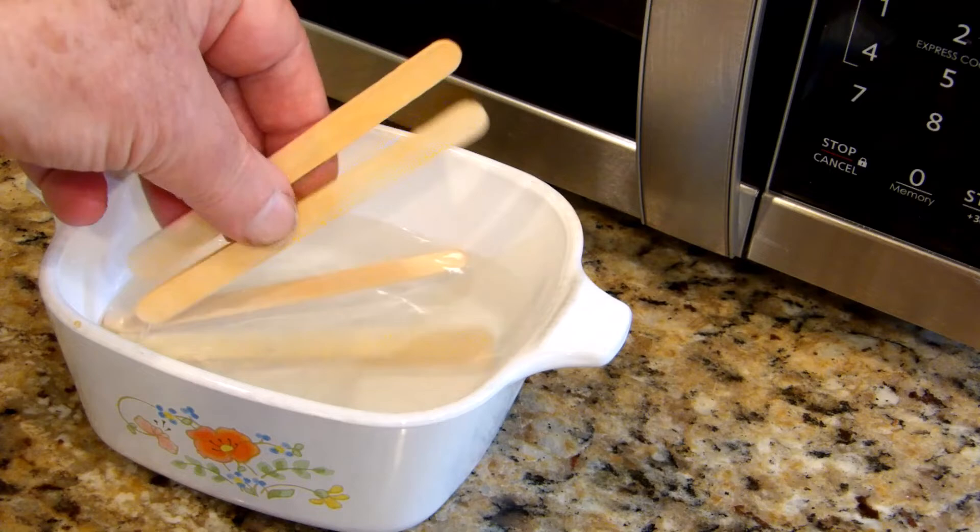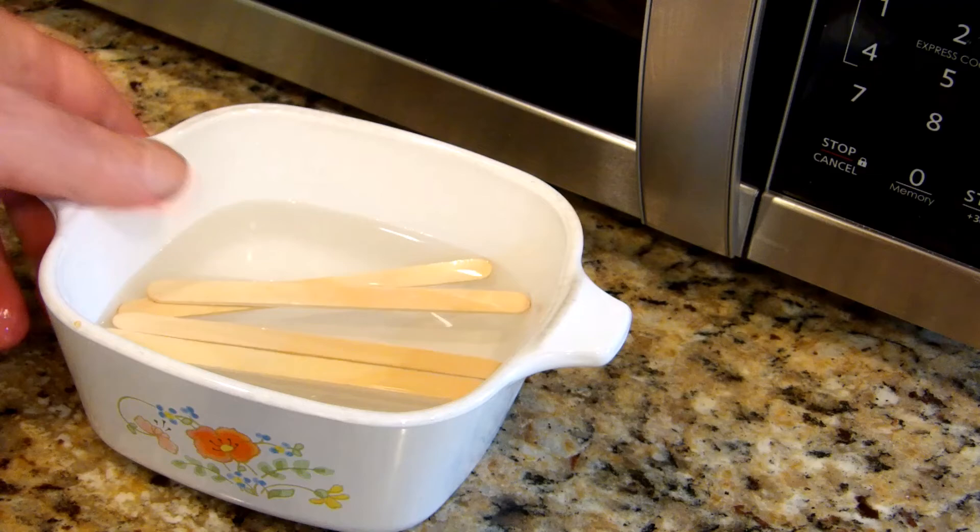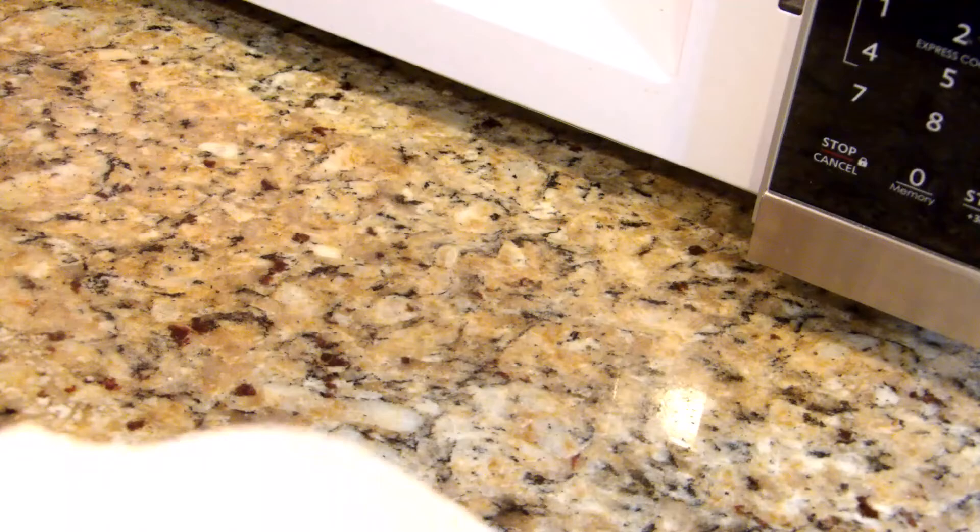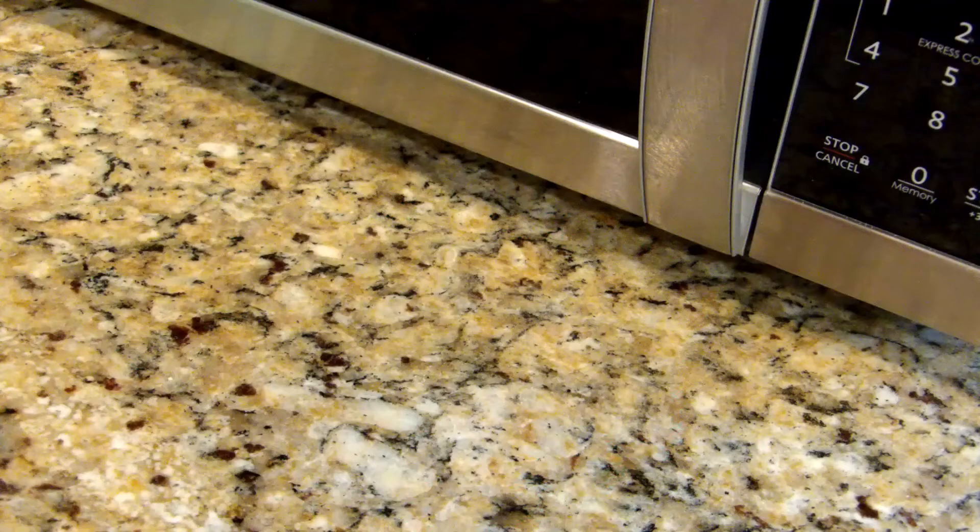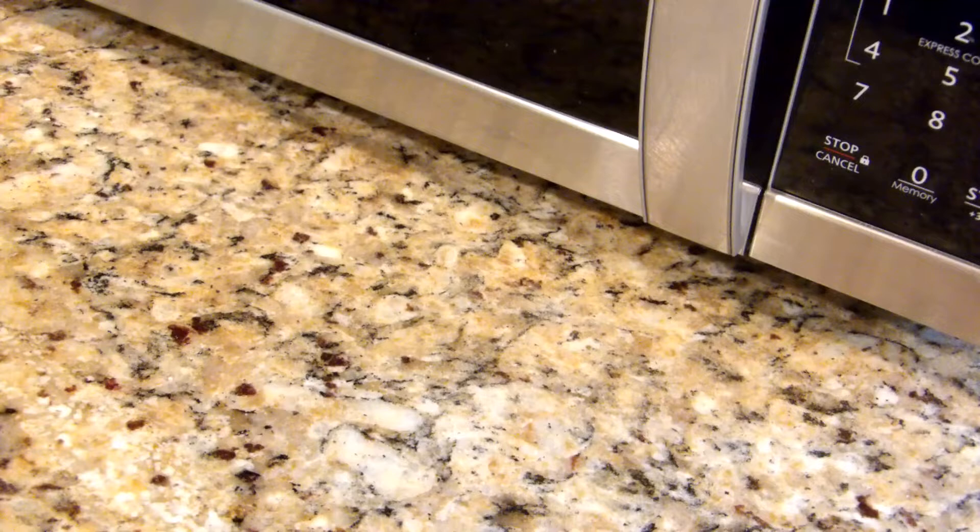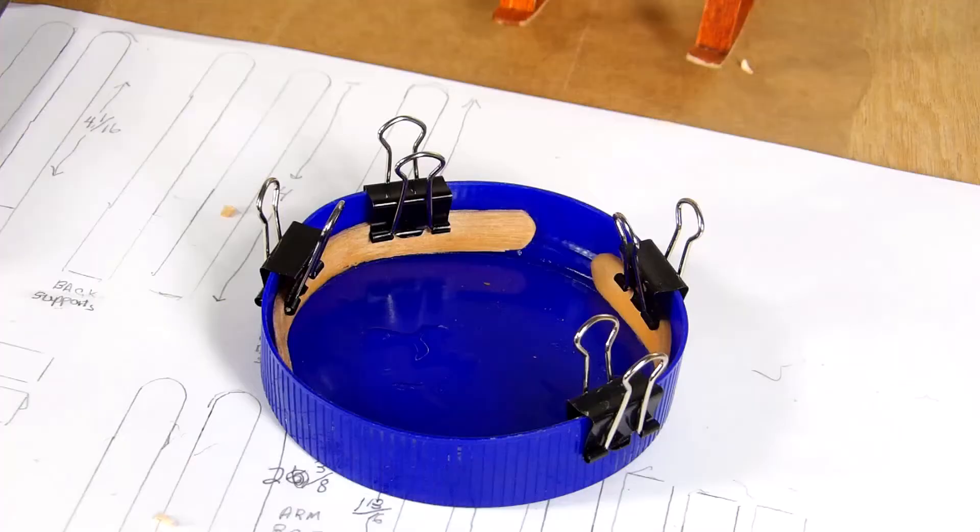So in order to soften up our popsicles so that they'll bend, we're going to put them in a microwave. We'll put them in the microwave for about four minutes so that they get nice and hot, and then they will bend hopefully. So when they're ready, we'll show you how.